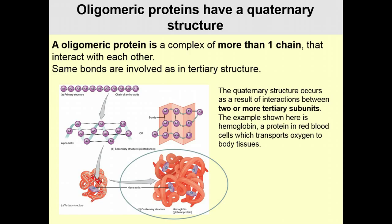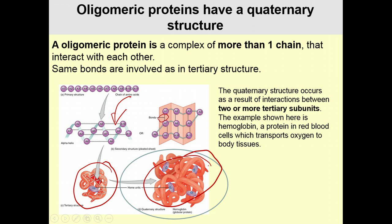Sometimes a protein is an oligomeric complex — more than one polypeptide chain interacting together. Primary structure gives the sequence, secondary structure produces alpha helices and beta sheets held by hydrogen bonds, and these fold into tertiary structure. When more than one separate chain comes together, we have quaternary structure. Hemoglobin, which carries oxygen, has four separate polypeptide subunits each folded into their own tertiary structure, together forming the quaternary structure. Quaternary structures are held by the same bond types as tertiary structures.